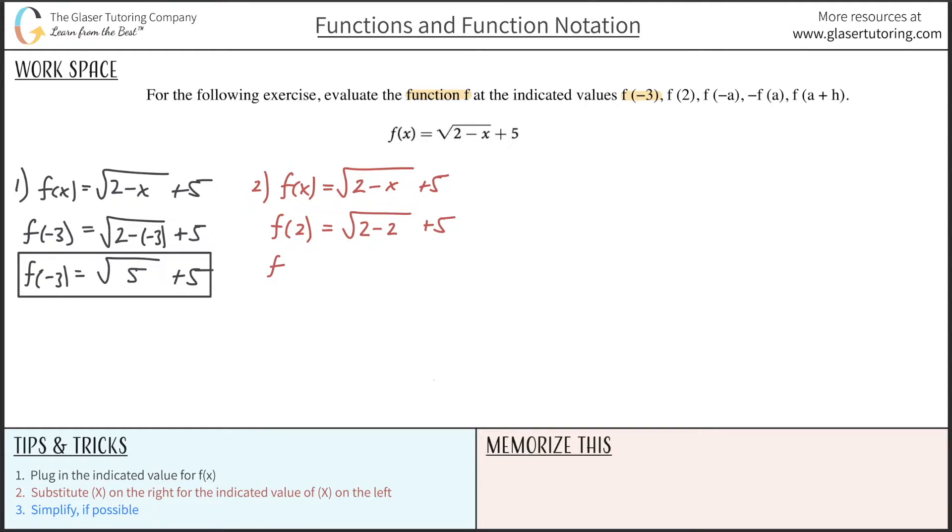So this is f of 2. And obviously 2 minus 2 is 0. Radical 0 is just 0. And then 0 plus 5 is just 5. Not bad at all. Let's take a look at the next one. So again, rewrite the function. So this is 2 minus x plus 5, or rewrite the equation. We'd have to test whether this is a function by using the vertical line test.